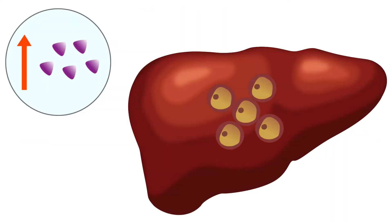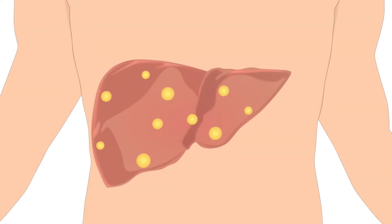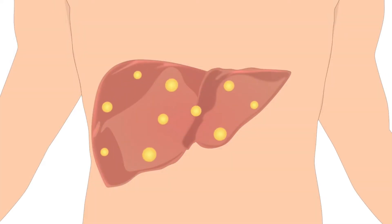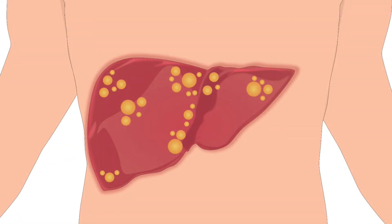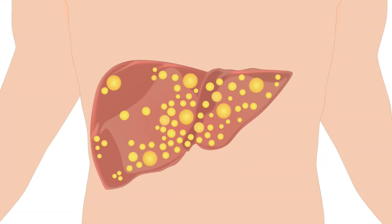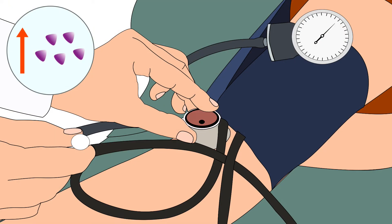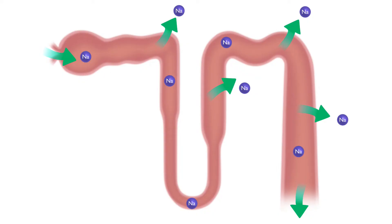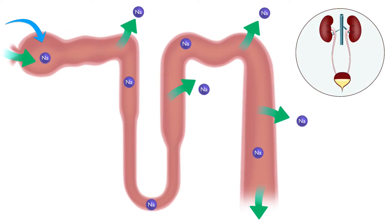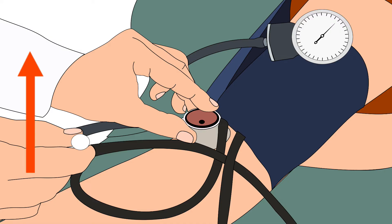High insulin levels inhibit the breakdown of fat. Over a period of time, fat keeps getting accumulated in the liver, which burdens the liver's capacity to handle fat. Eventually, the person develops fatty liver disease. Elevated insulin levels also increase the risk of hypertension by stimulating sodium reabsorption in the kidney, resulting in increased blood pressure.